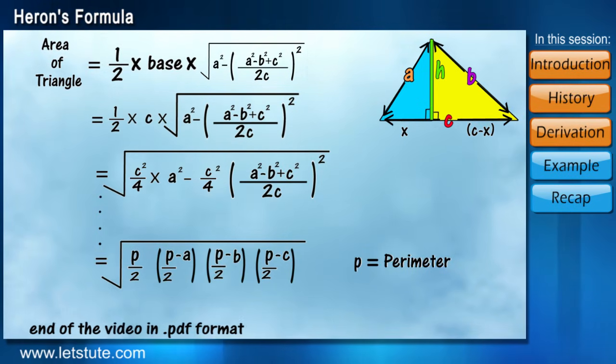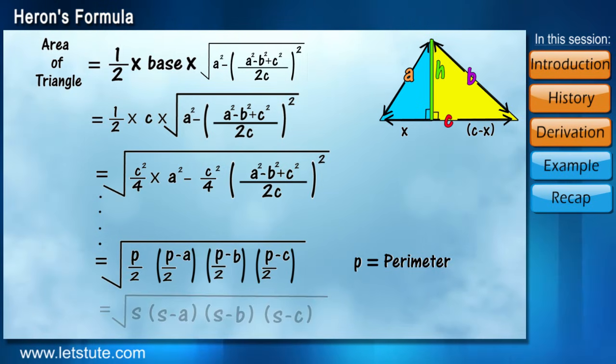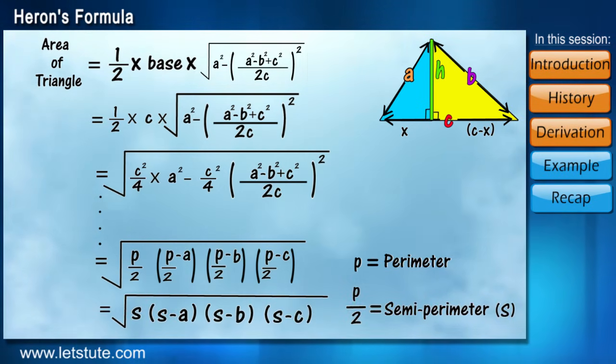Here we can see that perimeter is divided by 2 everywhere. So, we replace that with s which is nothing but semi-perimeter. And now, we have arrived to a formula which says that area of triangle is equal to under root of s multiplied by s minus a multiplied by s minus b multiplied by s minus c.